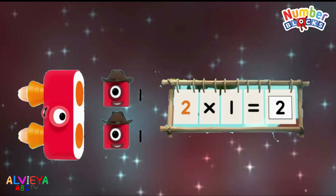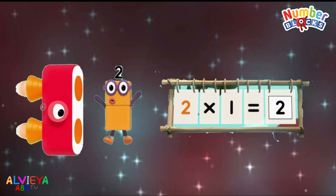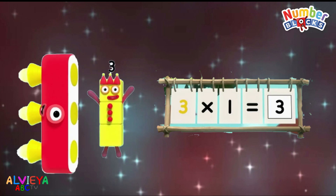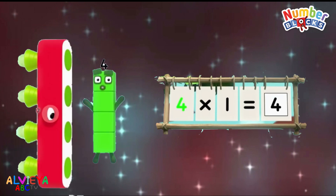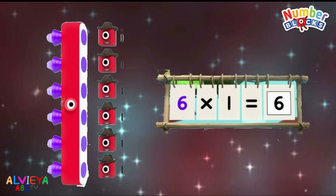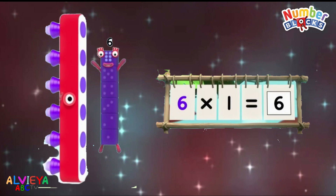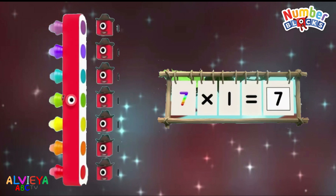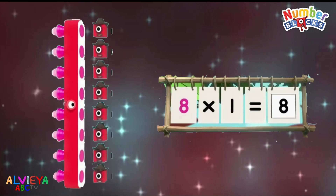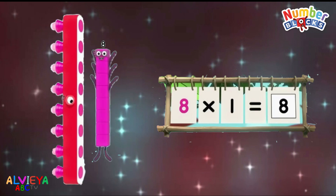One one is one. Two ones are two. Three ones are three. Four ones are four. Five ones are five. Six ones are six. And seven ones are seven. Eight ones are eight.